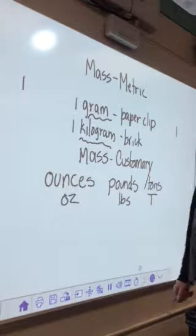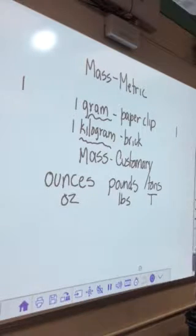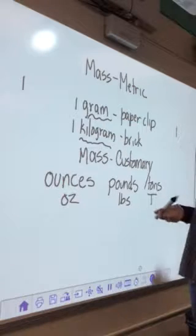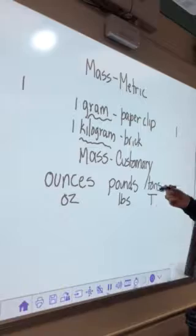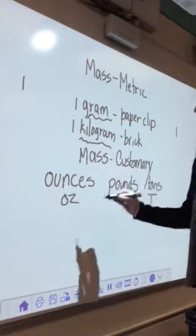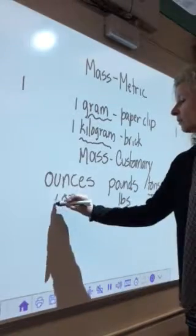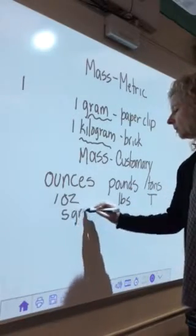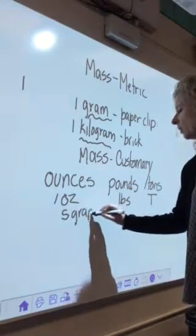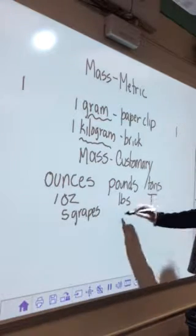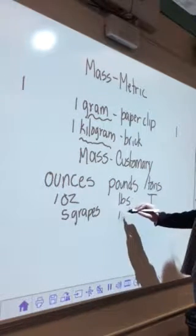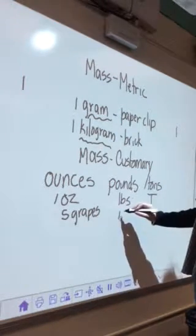For that we have the song: one ounce, one pound, one ton. High, low, it's weight we know. One ounce, one pound, one ton. One ounce is just five grapes. A pound is a small book. One ton is the weight of a small giraffe. One ounce, one pound, one ton.